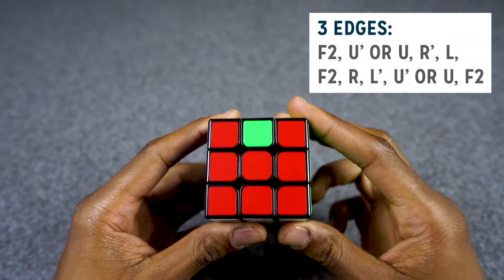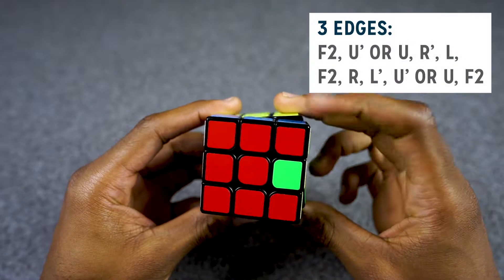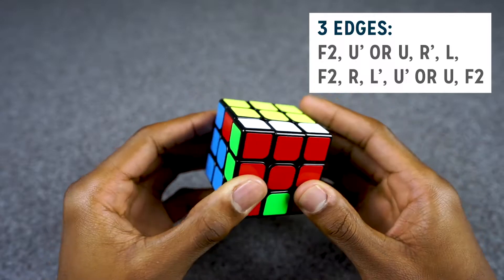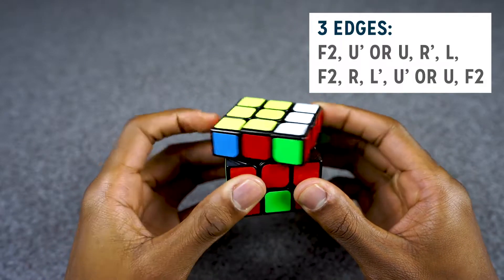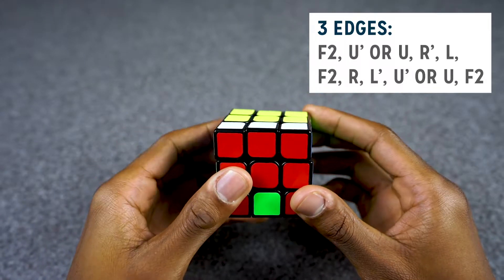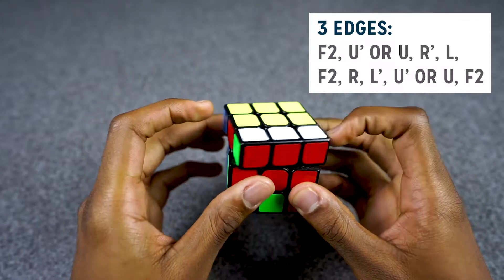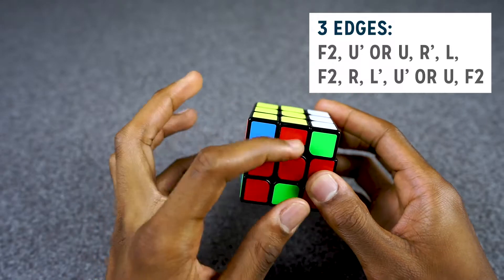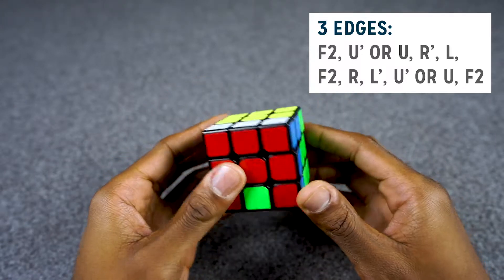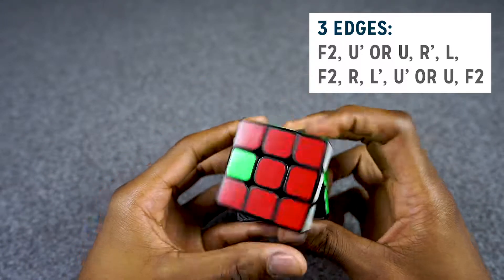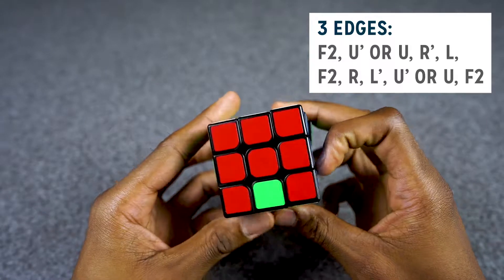We're going to have one in front of us, and then we're going to do an F2, and then we're going to do a U prime or a U. In this case we're going to do a U prime because we're going to try to make this dot right here match with its center.